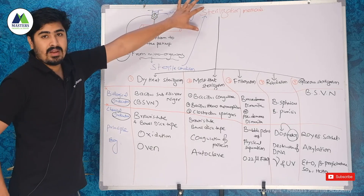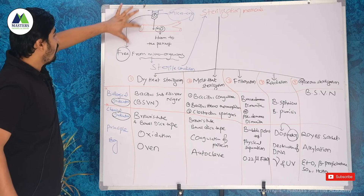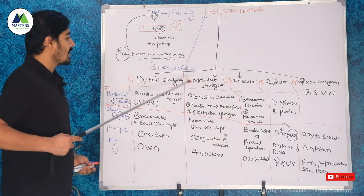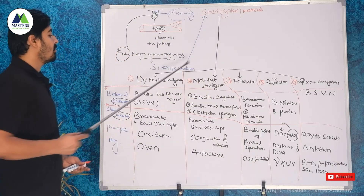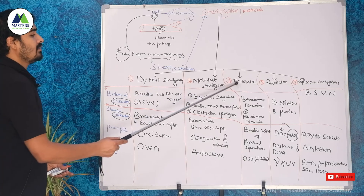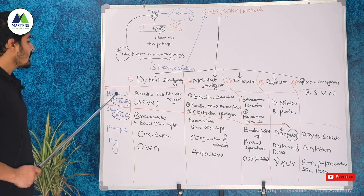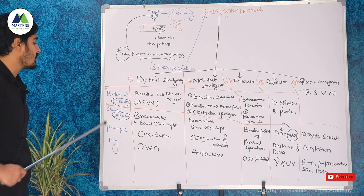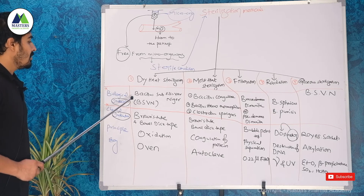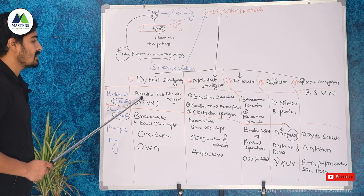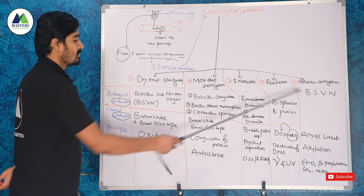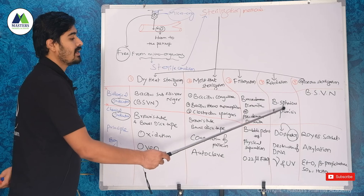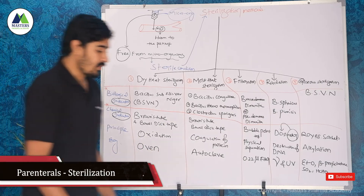Sterilization is very important. The formulation should be free from microorganisms — this condition is called sterile condition. To achieve it, we have five methods: dry heat sterilization, moist heat sterilization, filtration, radiation, and gaseous sterilization. Key exam points include the biological indicator, chemical indicator, principle, and example for each. The biological indicator for dry heat and gaseous sterilization is Bacillus subtilis var. niger. This table is very important for the examination.